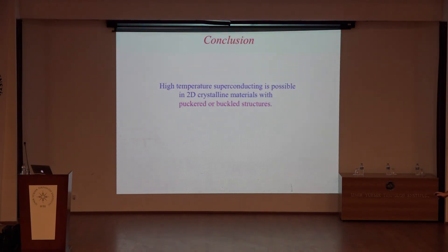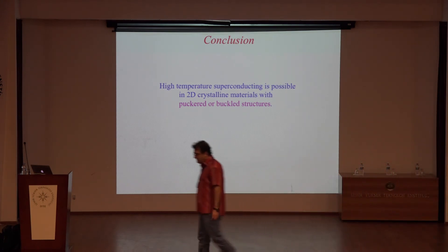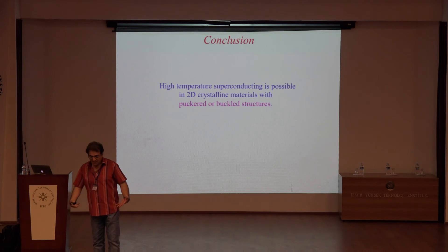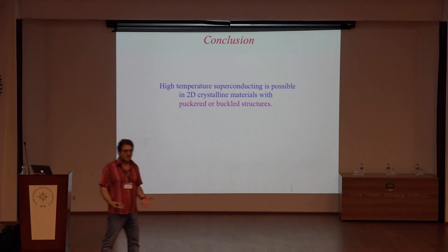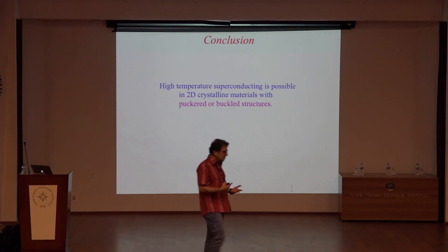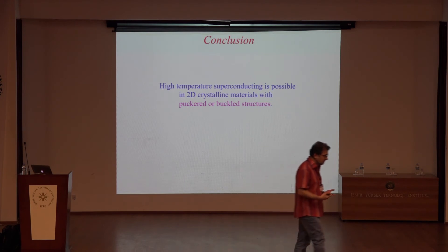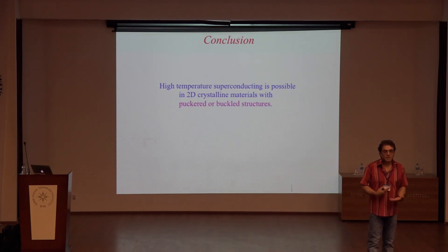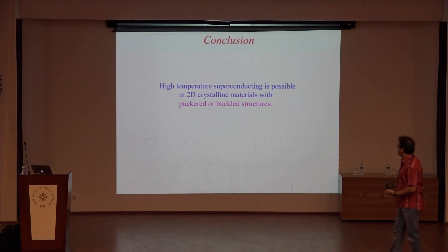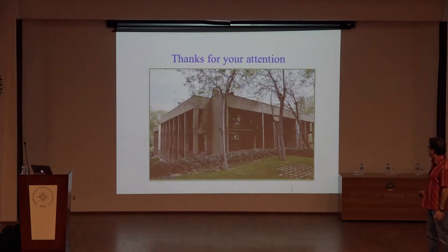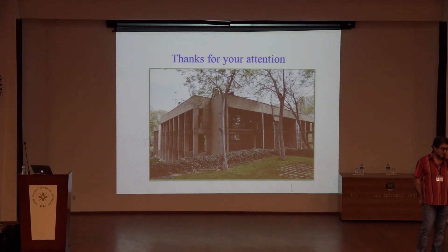In conclusion: if you have a buckled or puckered 2D system, you should have superconductivity with a higher critical temperature. This is the main idea of this work. Thank you for your attention.